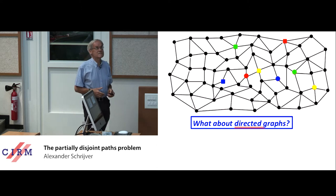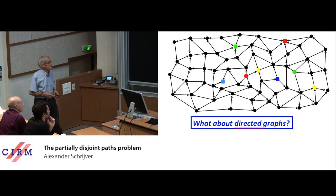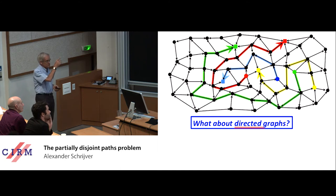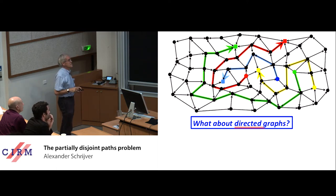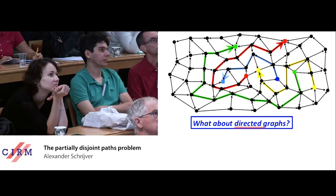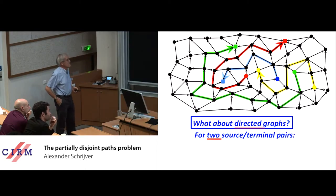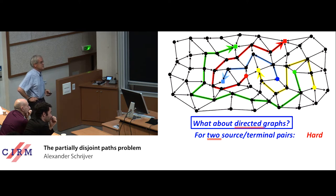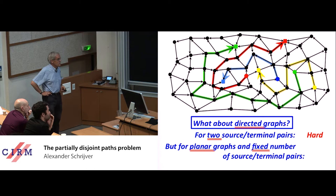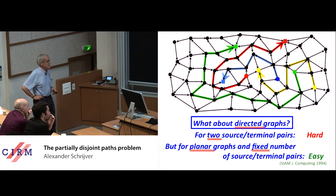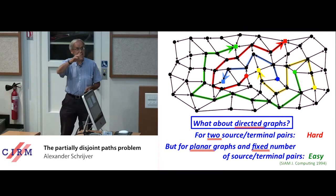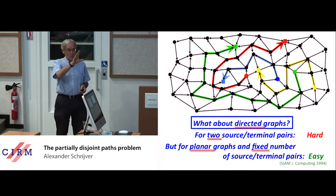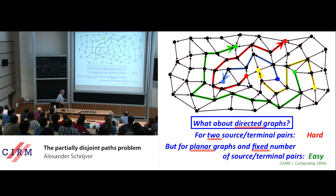What about directed graphs? The edges get an orientation, so the path should be a directed path following the orientation. Now it matters which vertex is a source and which is a terminal — they are ordered pairs. For two source-terminal pairs, it's already hard; that is a theorem of Fortune, Hopcroft, and Wyllie. But for planar graphs with a fixed number of source-terminal pairs k, it's easy — polynomial time. That is what I proved in the 90s.